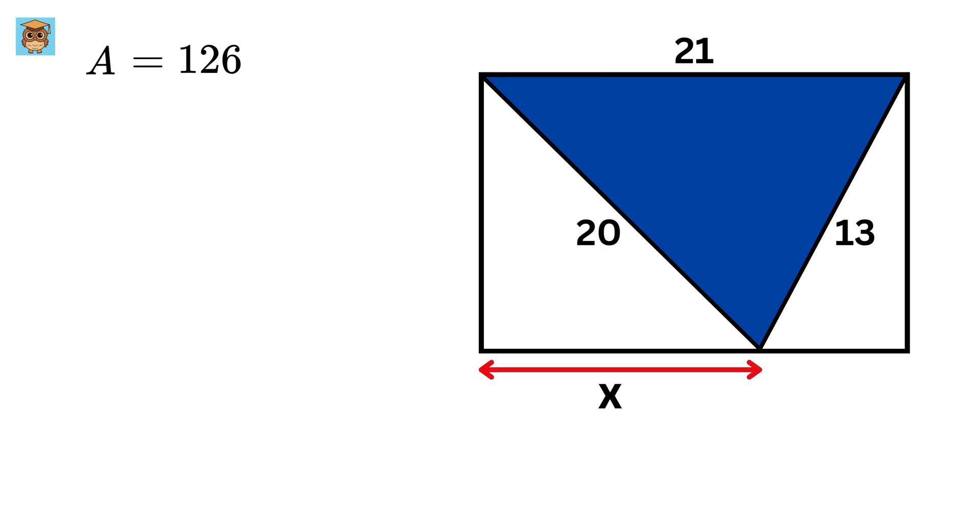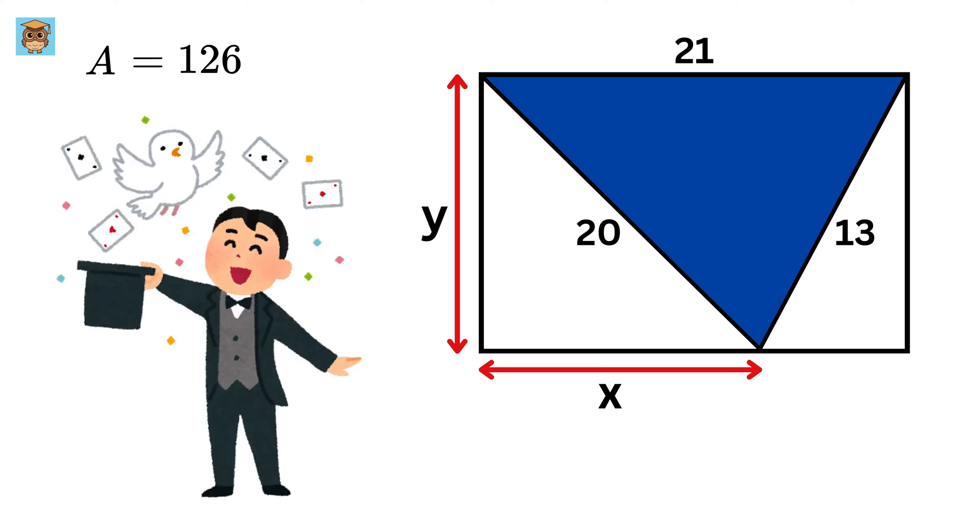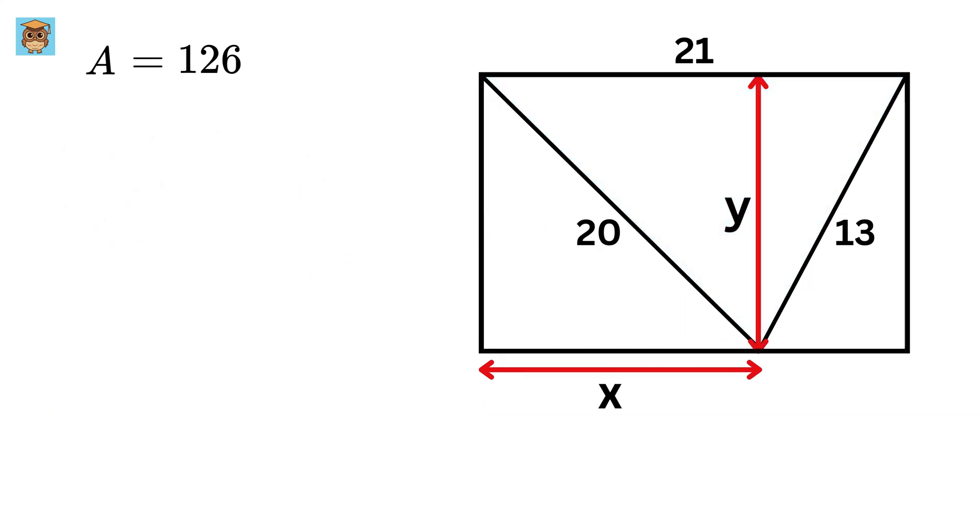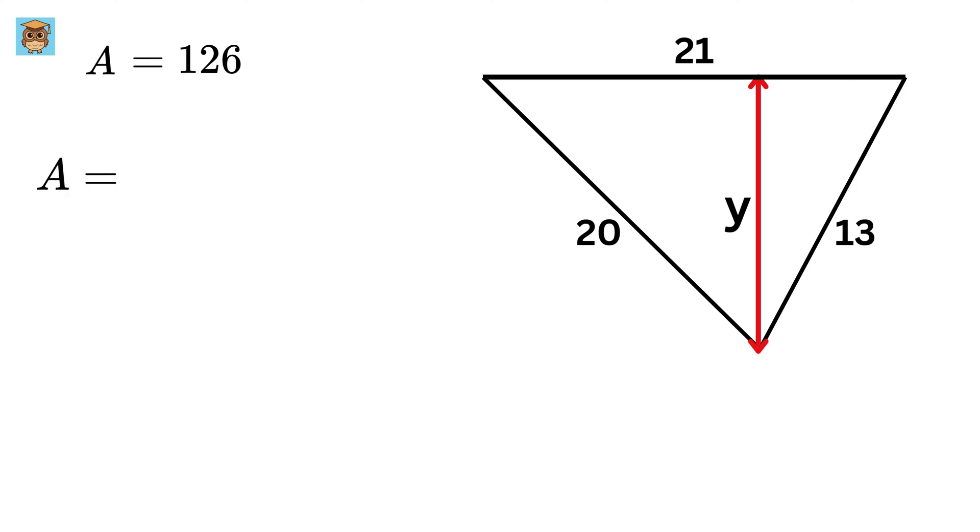Now, let us label this length as y, so here comes the magic. This length is also the same as the height of this triangle, right? Therefore, the area of this triangle can also be given as this base, or 21 times this height, or y over 2.